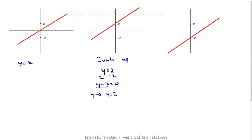So y will be equal to y minus two. We're going to write the original equation of y is equal to x. We're going to substitute y as y minus two, so y minus two is equal to x.